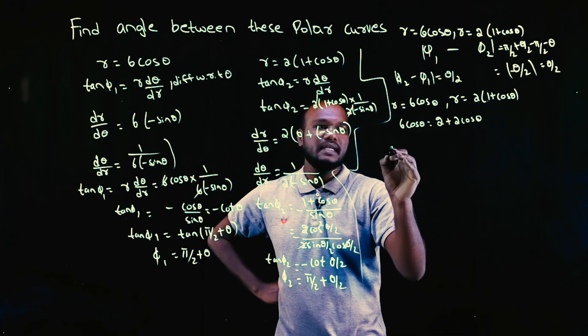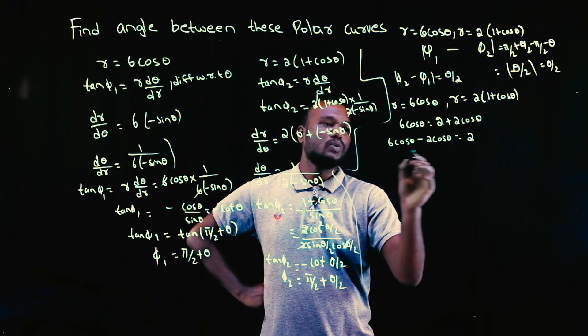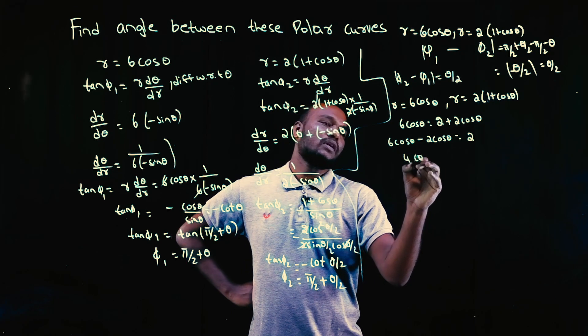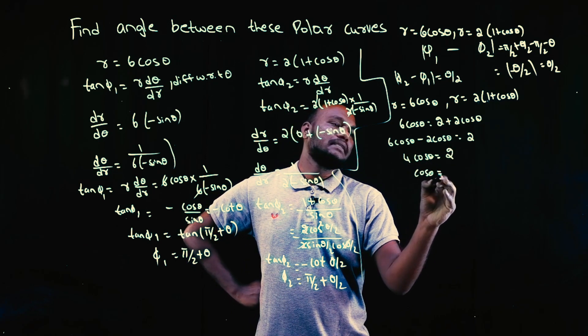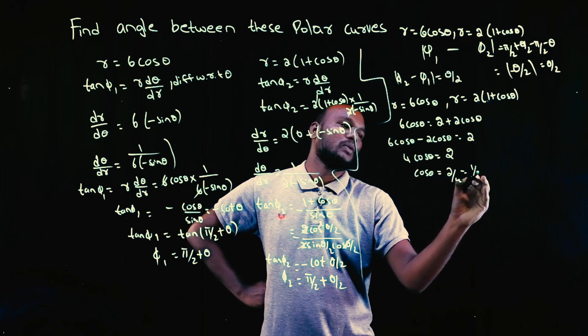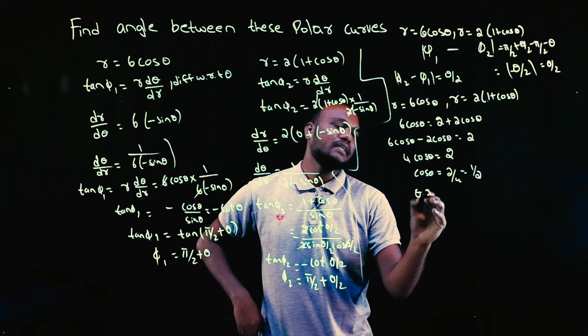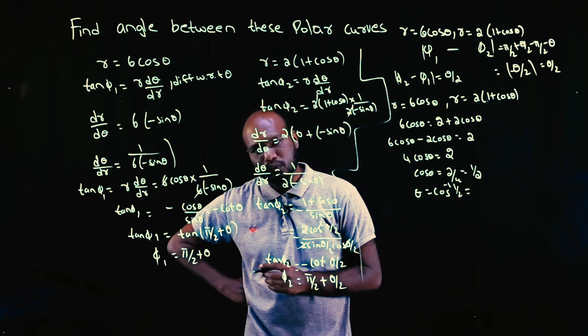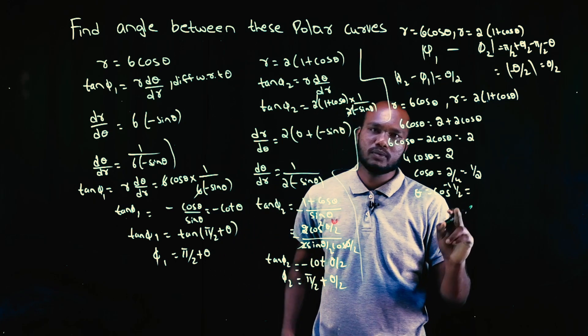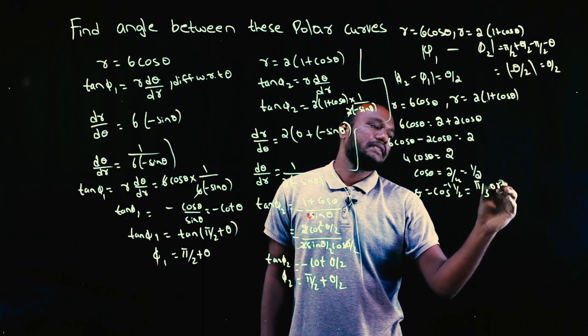I can send it this side. 6 cos θ minus 2 cos θ is equal to 2. How much is that? 4 cos θ is equal to 2, cos θ is equal to 2 by 4, that is equal to 1 by 2. For what angle of θ this will become 1/2? Theta is equal to cos inverse 1/2. How much is cos inverse 1/2? When does the cos become 1/2? That is 60 degree. That is π/3 or 60 degree.